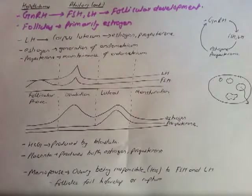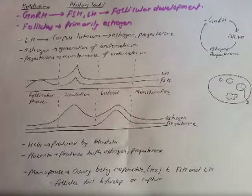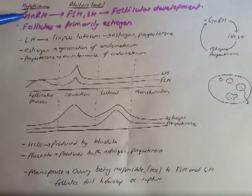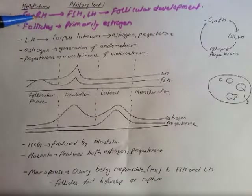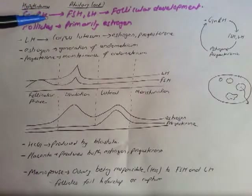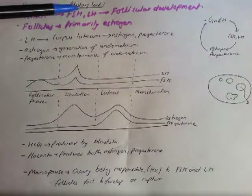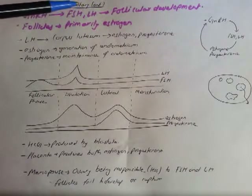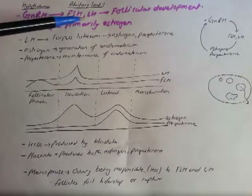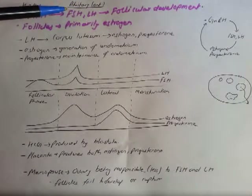Before we jump into the menstruation cycle, let's first learn a related concept. From our hypothalamus, a hormone called gonadotropin releasing hormone (GnRH) gets released, and this hormone stimulates the anterior pituitary gland to release follicle stimulating hormone (FSH) and luteinizing hormone (LH).